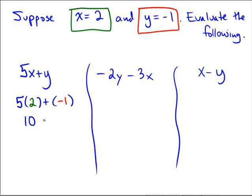5 times 2 is 10, and 10 plus negative 1 would be positive 9.